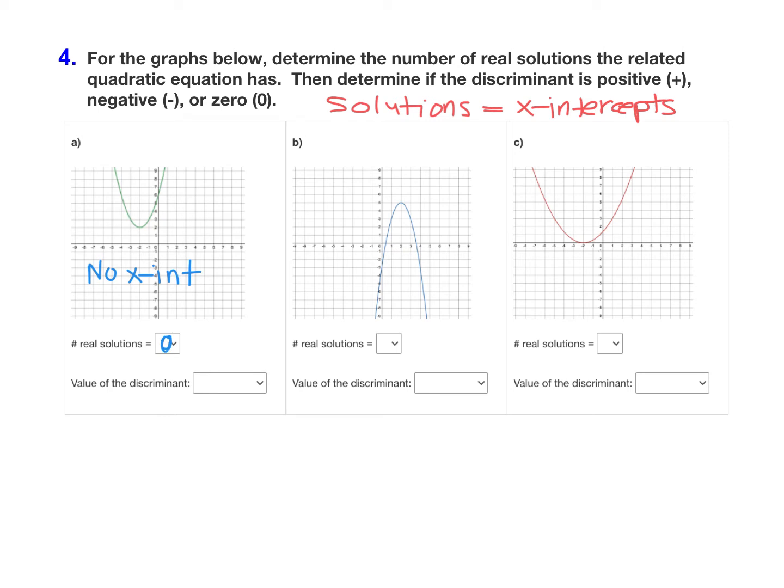And if there are no real solutions, if you go back to the chart where we relate the discriminant with the number of solutions, if there are no real solutions, that means the discriminant is a negative number.